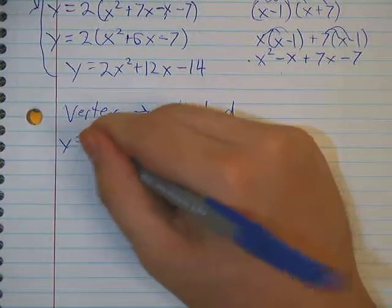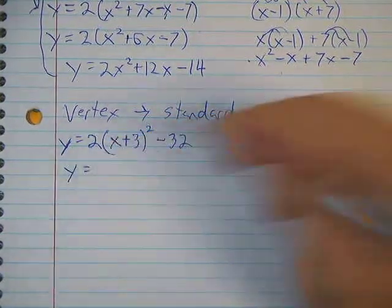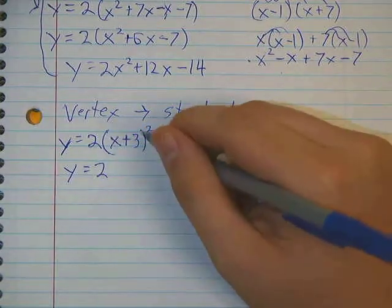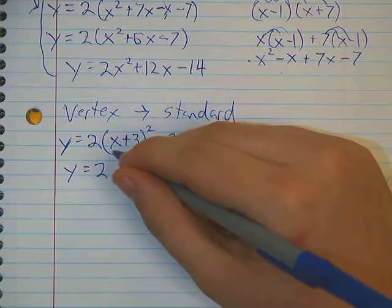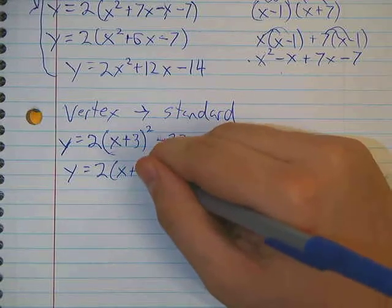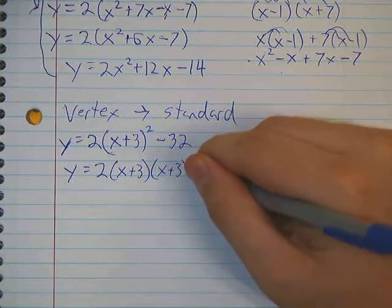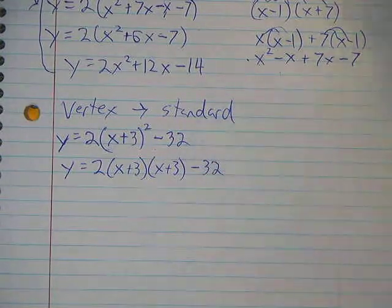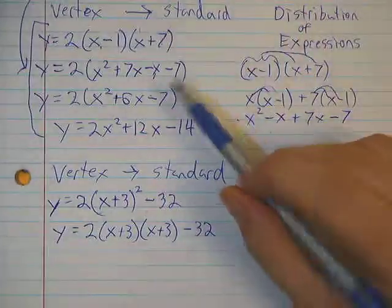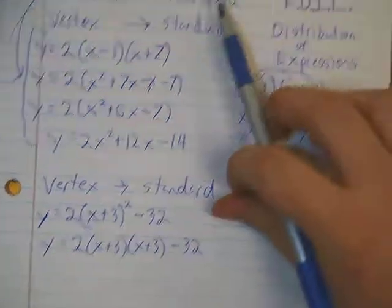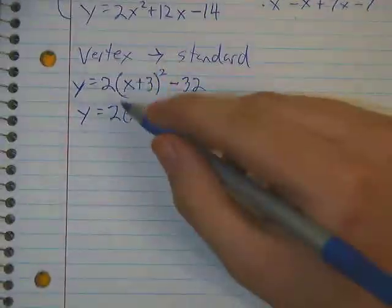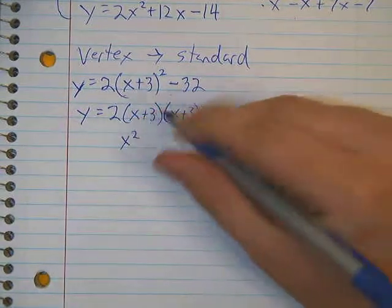All we're going to do is expand this until we get rid of all of our parentheses. So we have y equals. Again, in your order of operations, you want to do your exponents first. So I'm just going to rewrite what this is actually telling me to do. x plus 3 squared is saying take x plus 3 and multiply it by itself. And then we'll bring back our negative 32. Don't forget that part. And now this looks like another problem where we're going to distribute our expressions. Or again, you could call it FOIL if you wish.